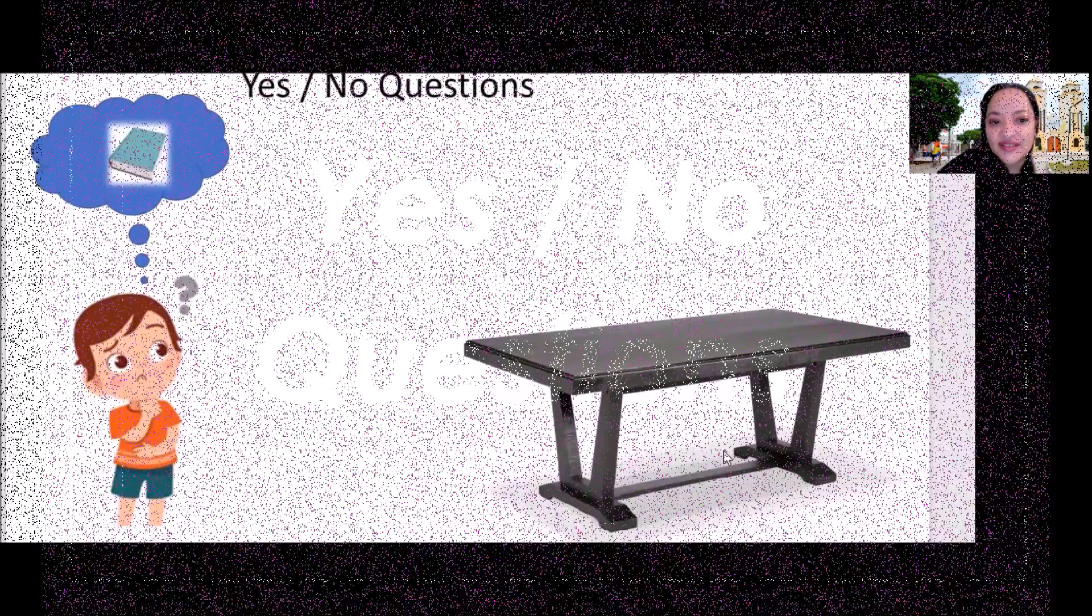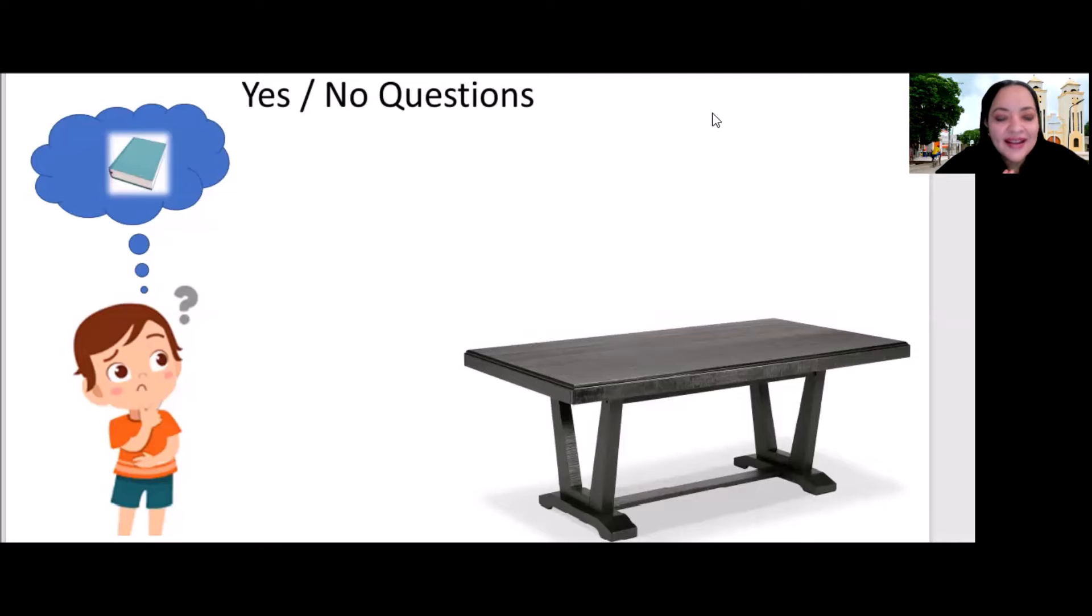So let's analyze the picture. Here we have yes/no questions asking for things. For example, he's thinking about a book and he's thinking, is the book on the table? So what do you see? Yes or no? No! Of course, no. So the answer is, no, it's not. The book is not on the table.